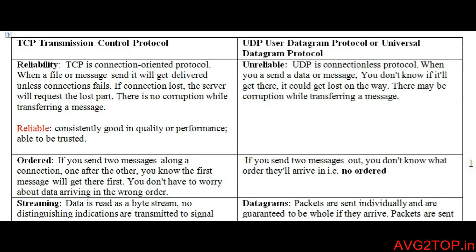The second point is order. In TCP, when you send two or more messages at the same time, we will know which message will come first, because the first message you send will be first delivered. But in UDP, we cannot assume or we will not know in which order we will receive the file.